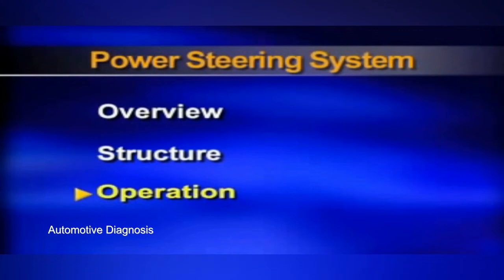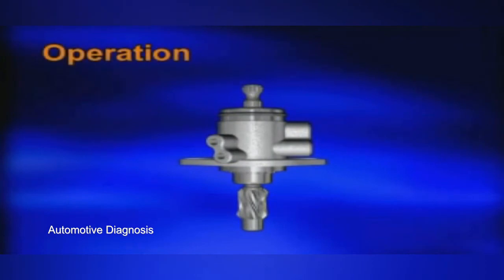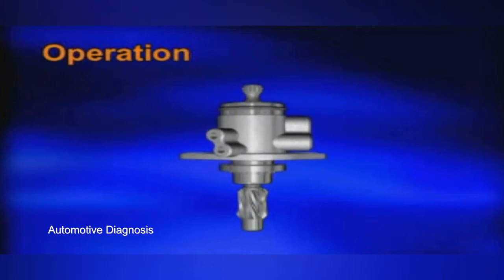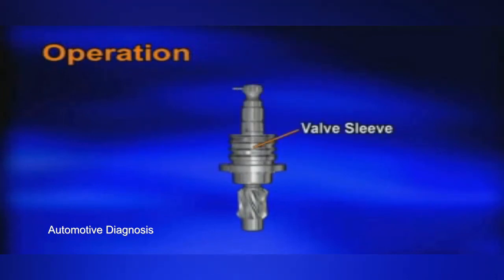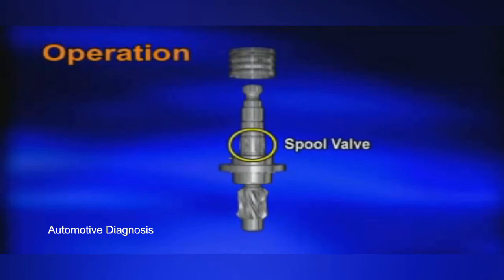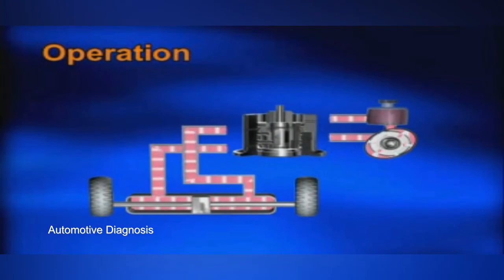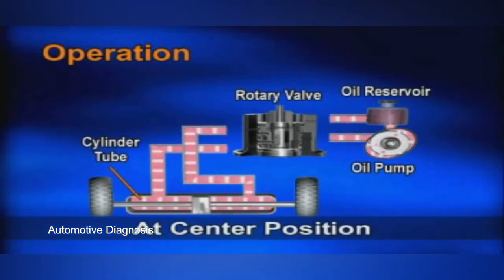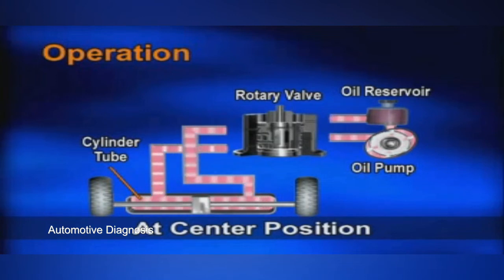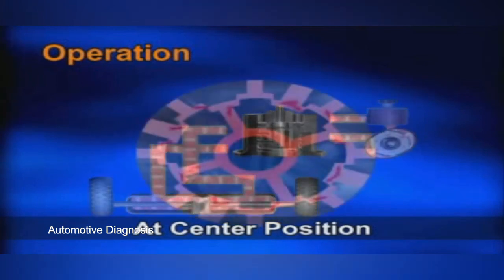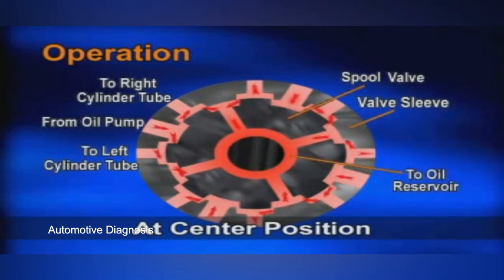Now let's take a look at the operation of power steering. I would like to explain the hydraulic flow inside the valve assembly. Oil flow control in the power cylinder is done by the spool valve in the valve sleeve. Without turning effort at the steering wheel, the torsion bar and rotary valve remain stationary. Even though the rotary valve is stationary, the pump continues to supply fluid to the gearbox. As it enters the housing, the fluid flows to the valve sleeve center groove.